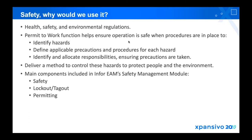The main important goal here is to deliver a method to control these hazards so that people don't get any sort of injuries and the environment is not affected by any type of problem that may arise through the execution of work related to one of the equipment. In terms of what the main components of InforEAM safety management model brings out: it brings out safety, the lockout/tagout, and also the permit, which is basically the final document that we must use in order to execute a job. It will have all the necessary information that we must take into consideration at the moment of executing the job.